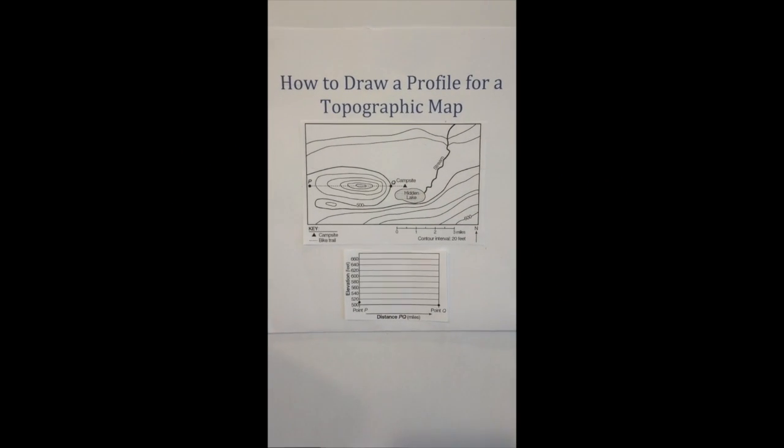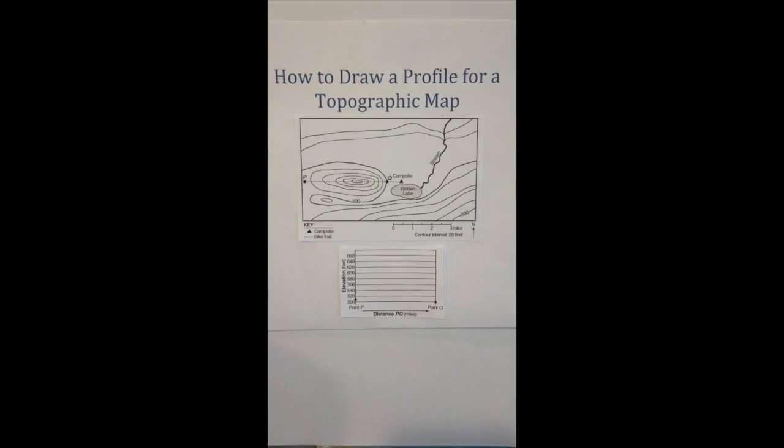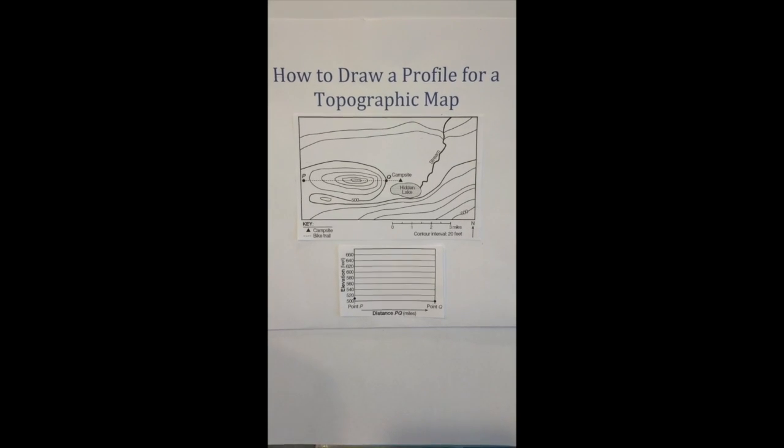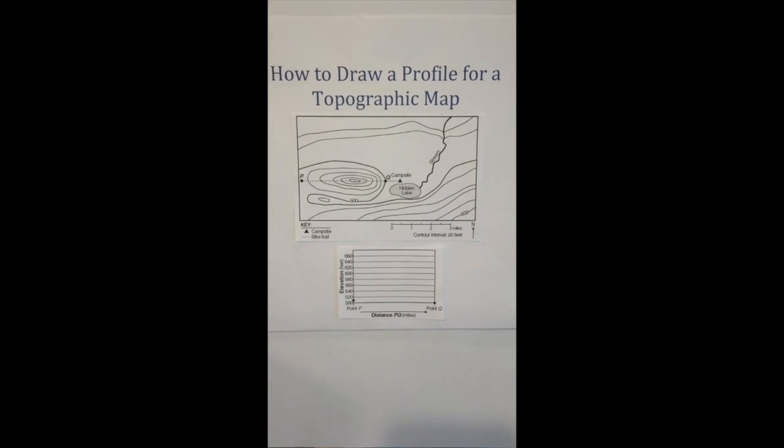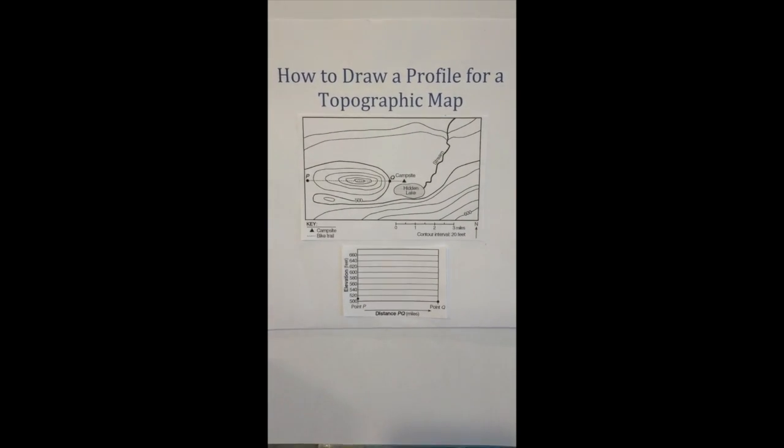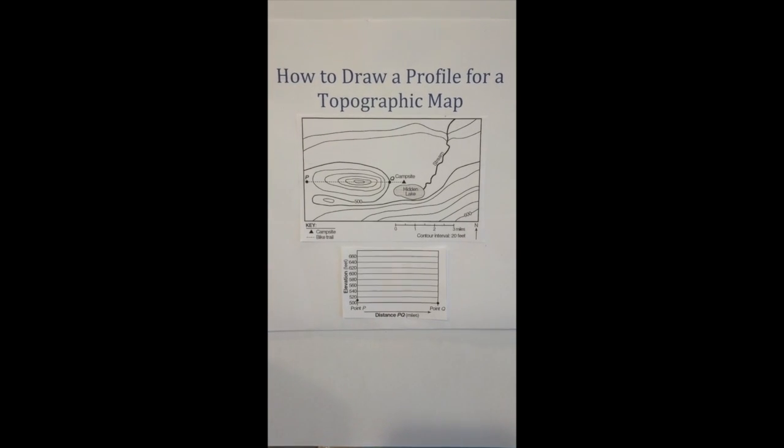Okay, let's take a look at how we can take a topographic map and make a profile for a specific line along that map. A profile is simply a side view or a cross-section of a landscape on a map.